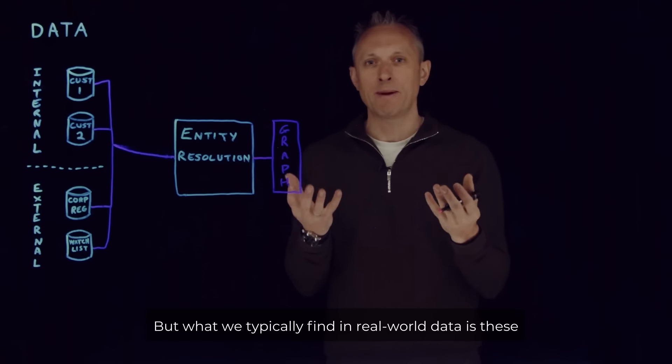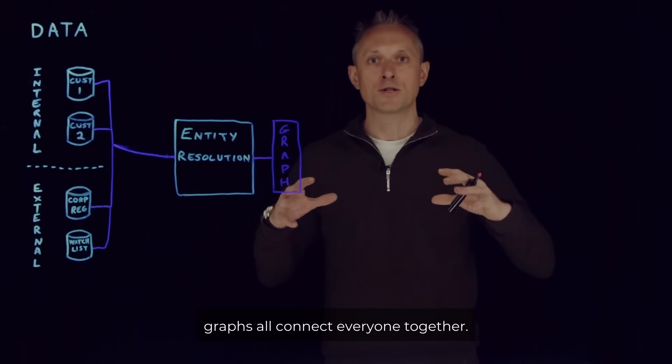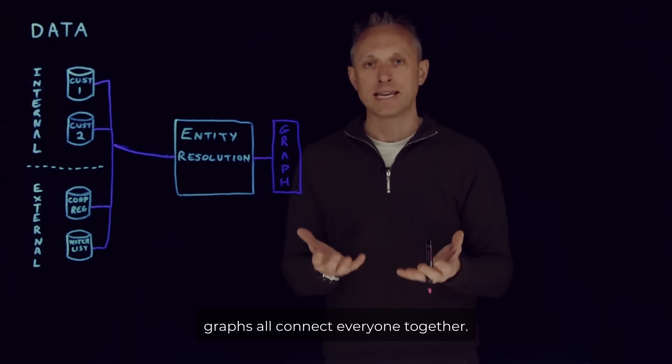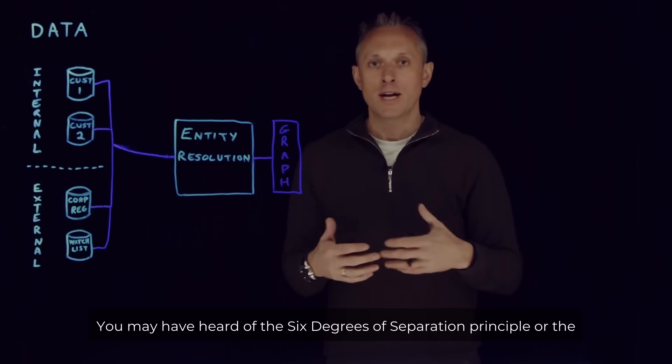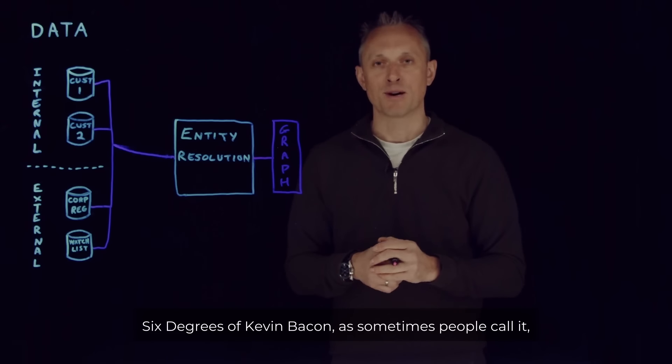But what we typically find in real world data is these graphs all connect everyone together. You may have heard of the six degrees of separation principle or the six degrees of Kevin Bacon as sometimes people call it,